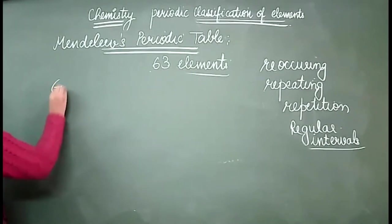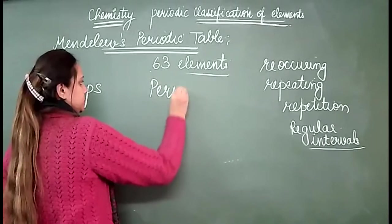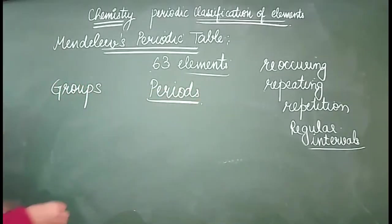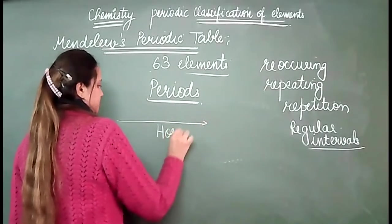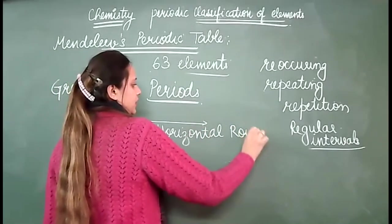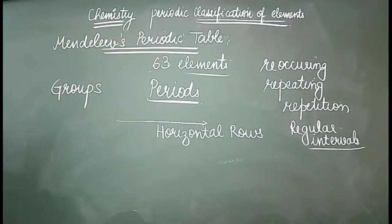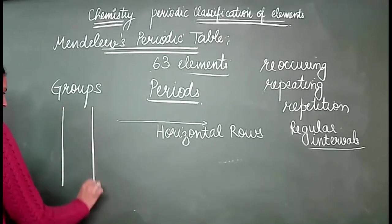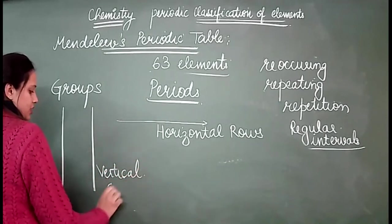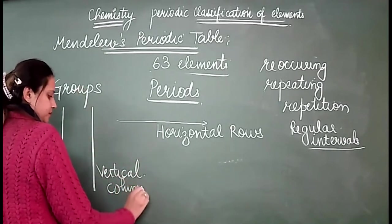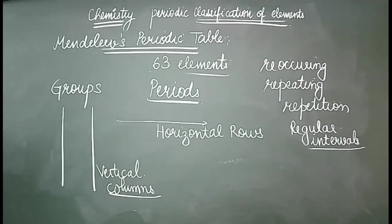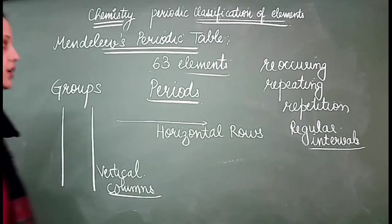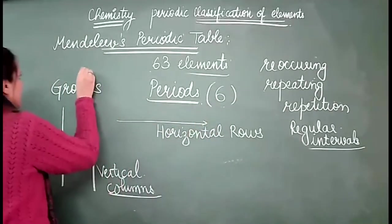After his discovery, he gave us a resultant table — the Mendeleev periodic table. He arranged elements into families and groups. He gave the concept of groups and periods, classifying these elements into 6 periods and 8 groups.